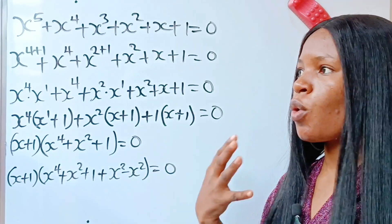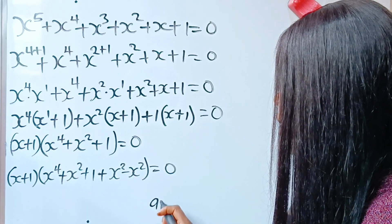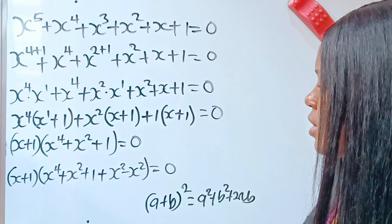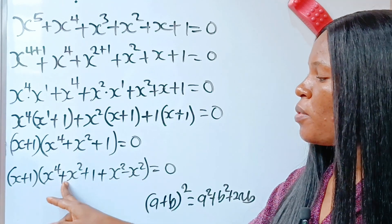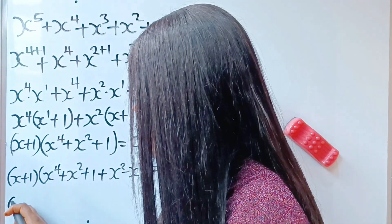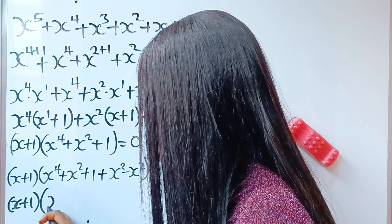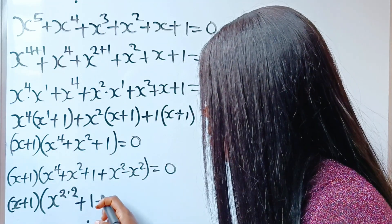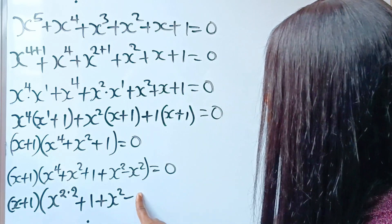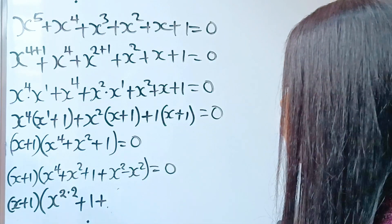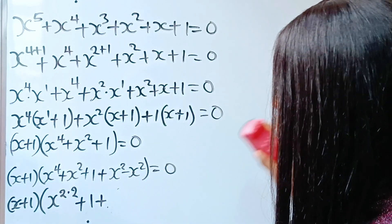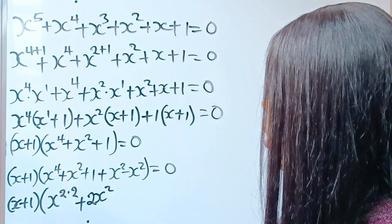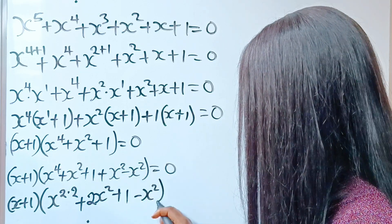I'm trying to form an algebraic identity that states that a plus b squared is equal to a squared plus b squared plus 2ab. So, I had to bring this in to help me form such here. Now, we have x plus 1 multiplied by x to the power of 4, plus 1, plus x squared minus... At this point, x squared plus x squared is 2x squared. Plus 1 minus x squared is equal to 0.